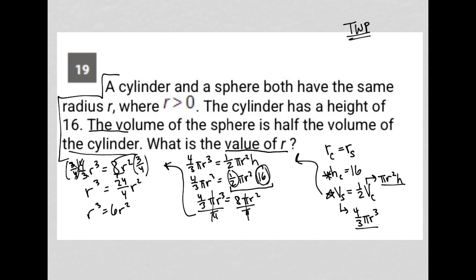And I just want R. So I'm going to divide by R squared on both sides. So that this R squared goes. And R cubed divided by R squared is just R. And I end up with R equals six. So there's my answer. R equals six.